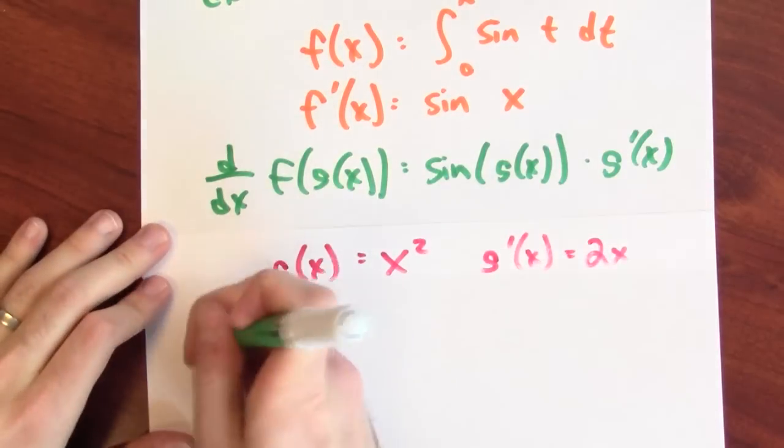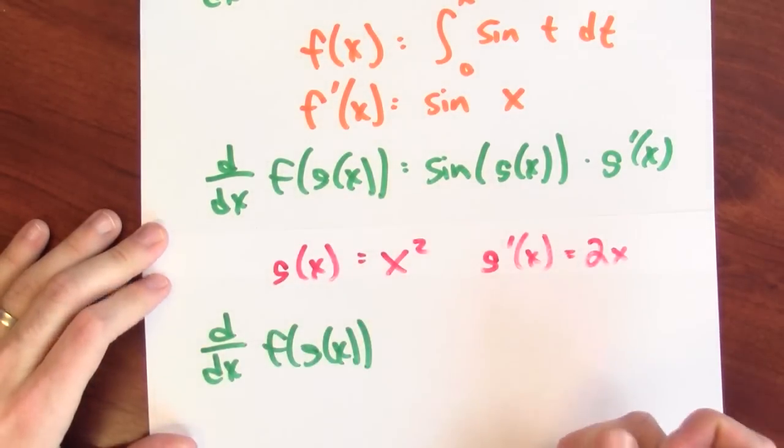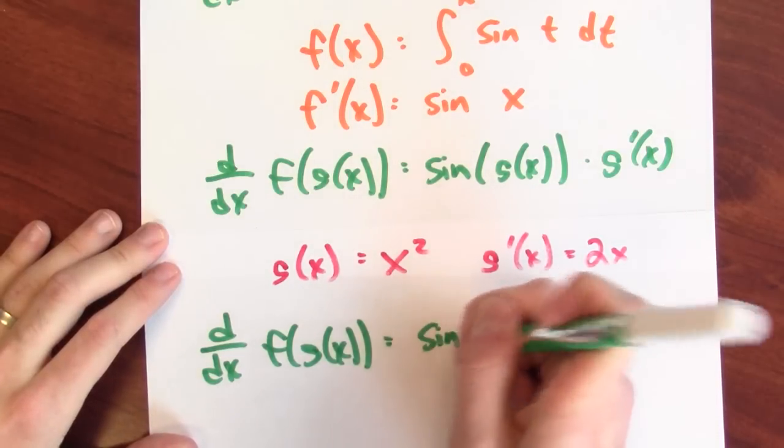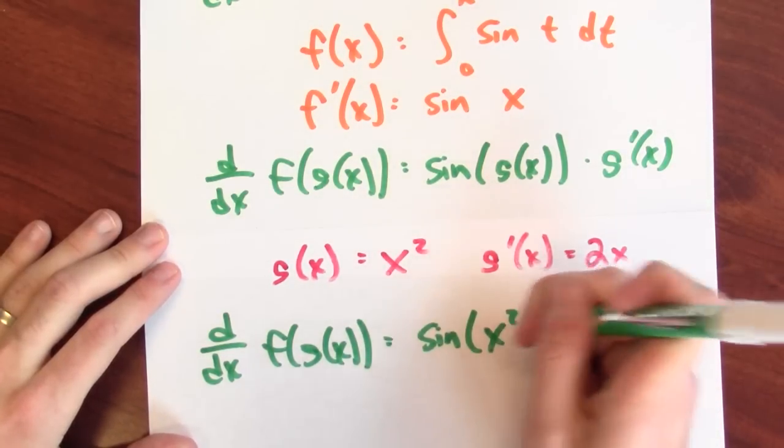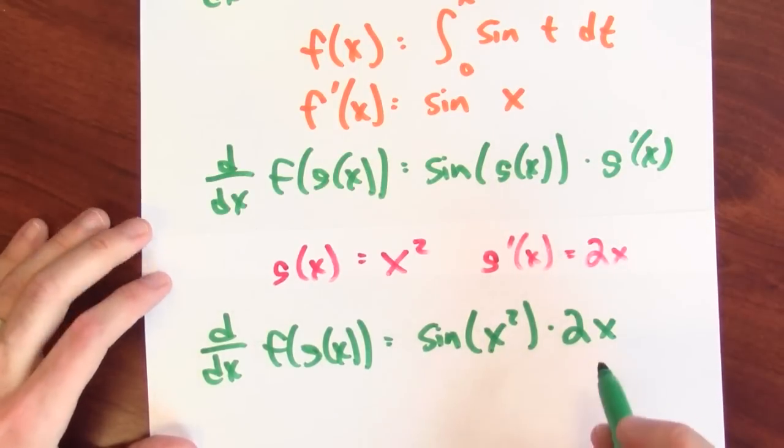And in that case, the derivative of f of g of x is sine of g, which is x squared, times the derivative of g, which is 2x. So let's write down our final answer in this specific case.